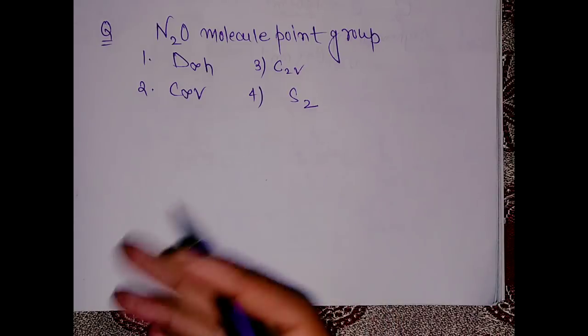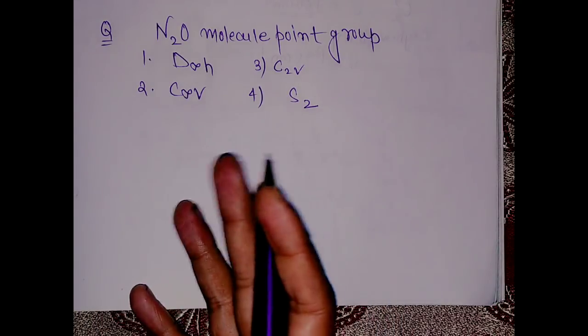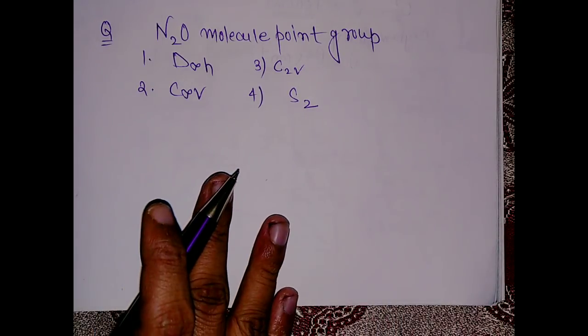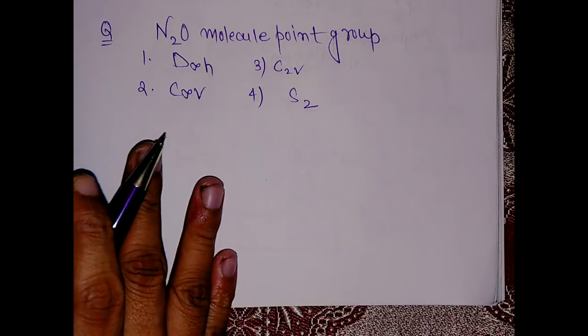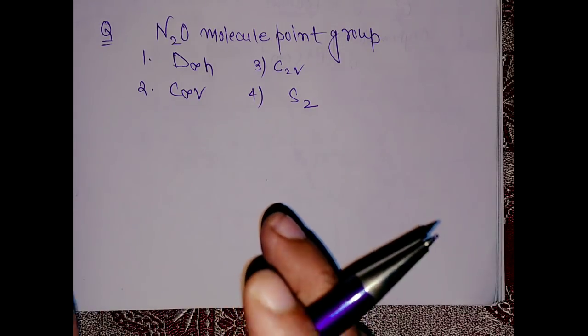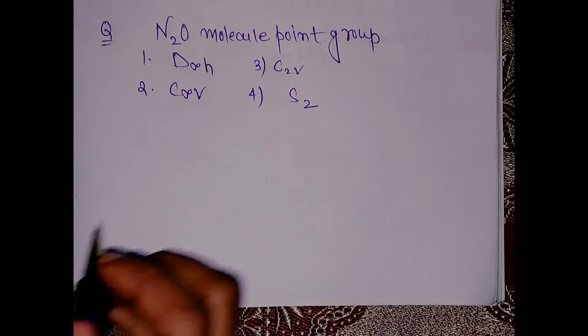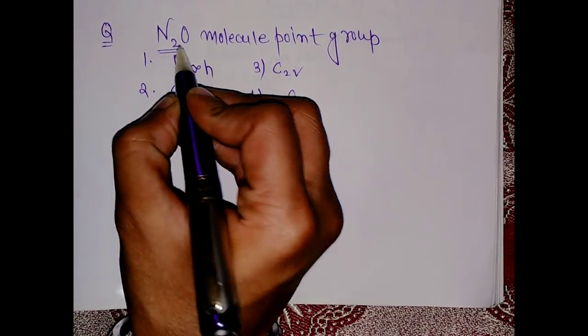Hello everyone, this question came in today's examination, which is your CSIR chemical sciences. This question is from group theory, and to be precise, it is from point groups. So we have this N2O molecule.